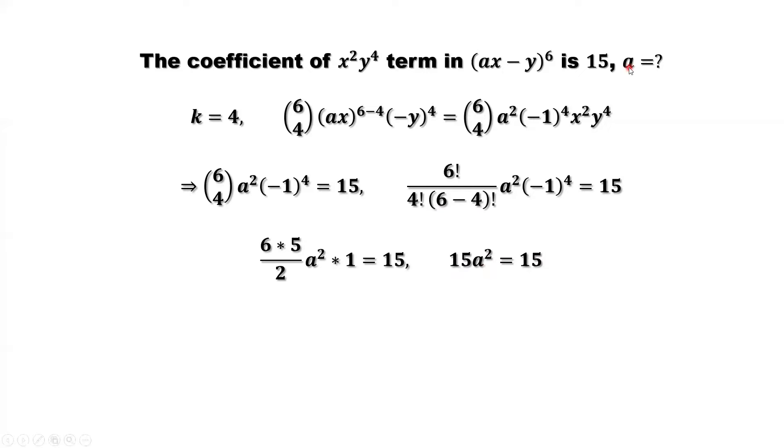We need a. How to get a? A squared equals 1. Both sides take the square root. We have a equals positive or negative 1. This is the answer.